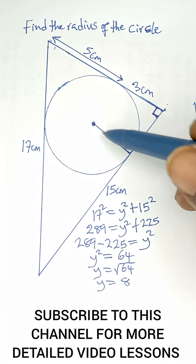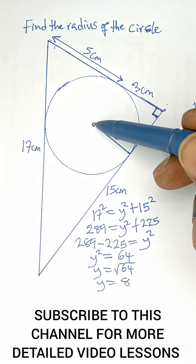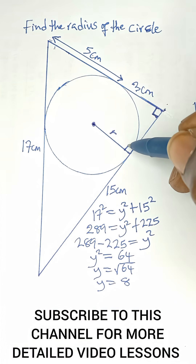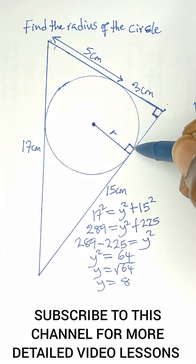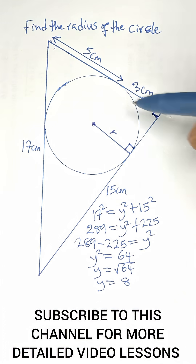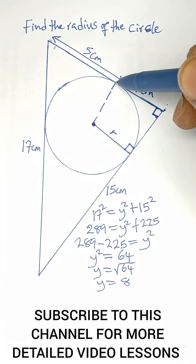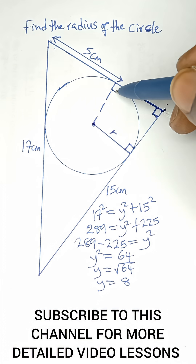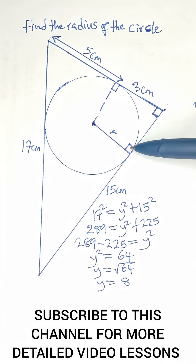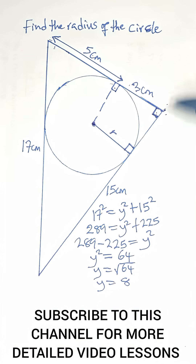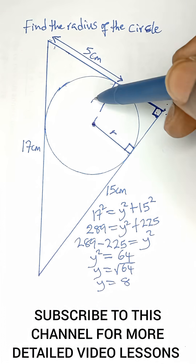Looking back at the circle: a line from the center of a circle to a tangent is perpendicular to the tangent, meaning it is at a right angle. Sketching lines from the center to the tangent, each angle is 90 degrees — this one, this one, this one, and this one too. That tells us this shape is a square.